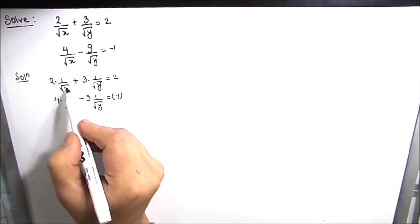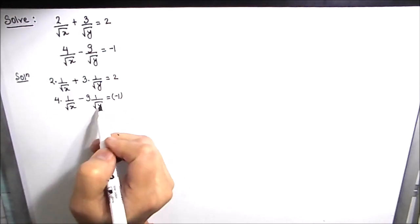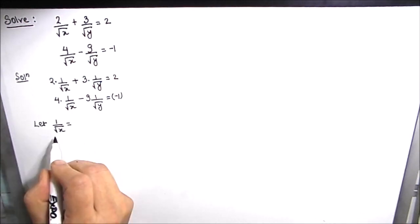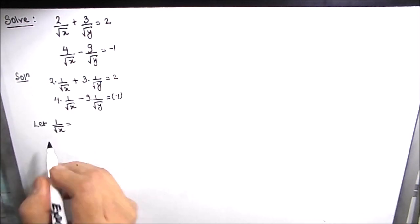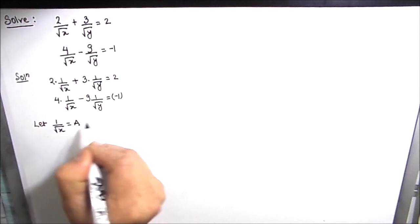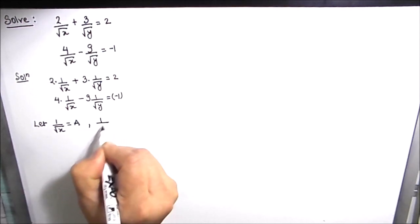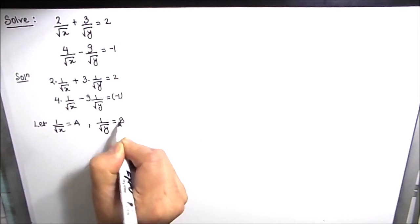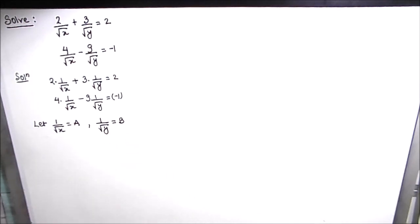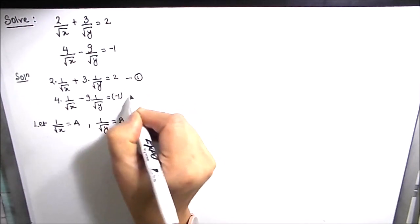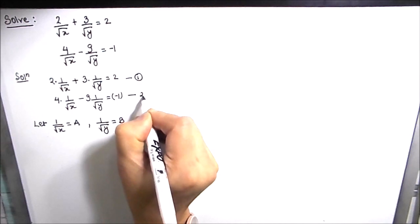In place of 1 over root x and 1 over root y, we are going to substitute A and B. Let us suppose that 1 over root x is equal to A and 1 over root y is equal to B. This is equation 1 and this is equation 2.